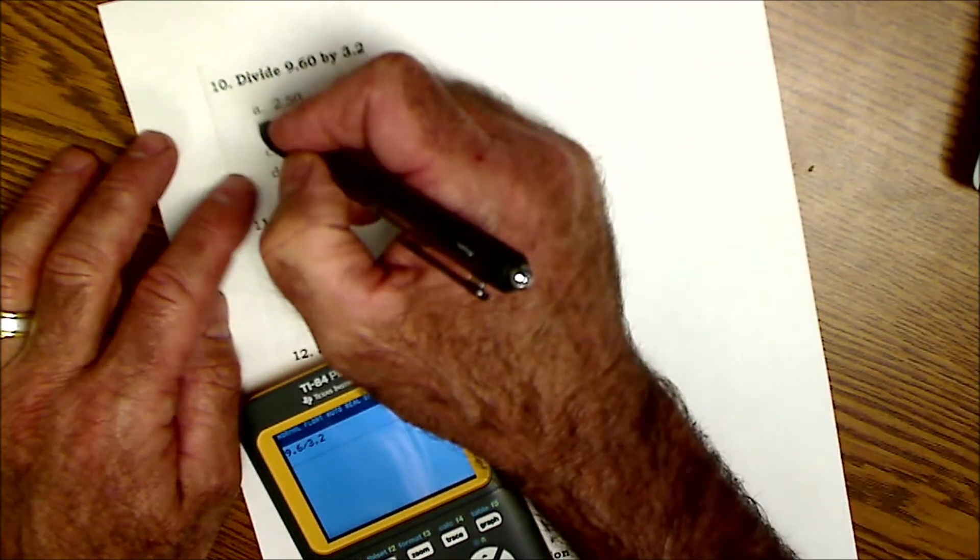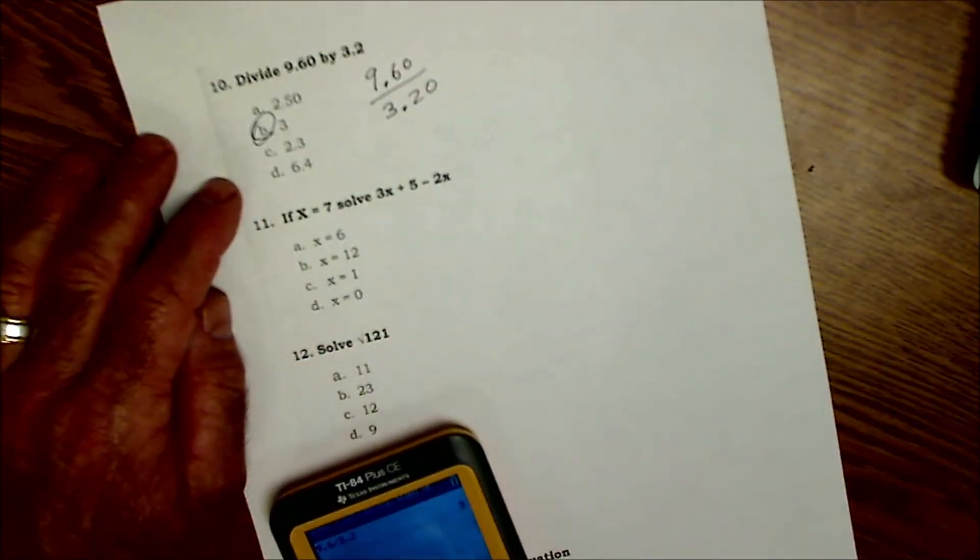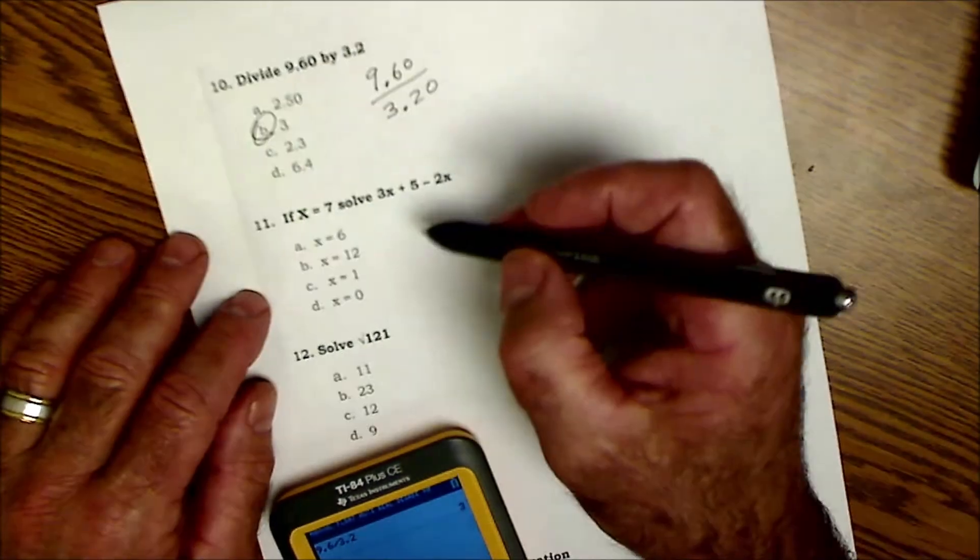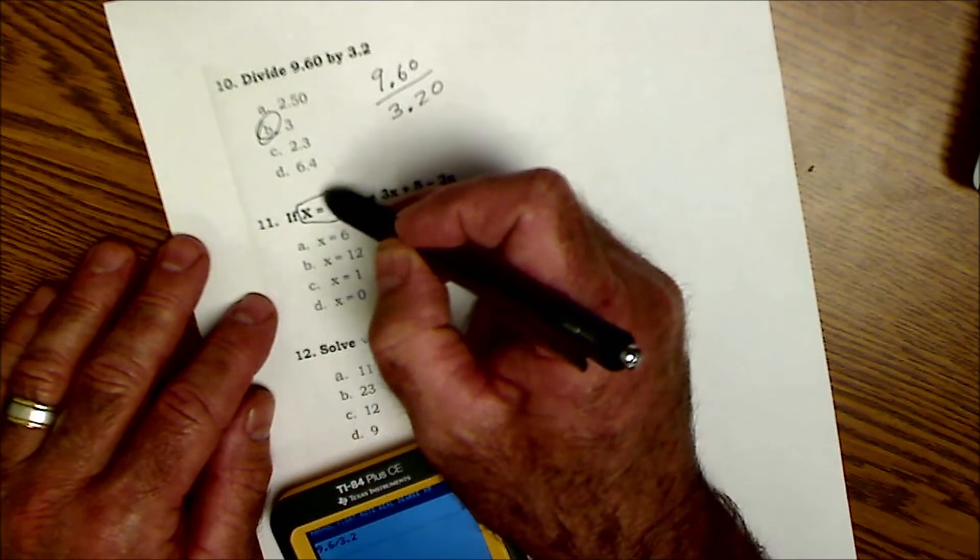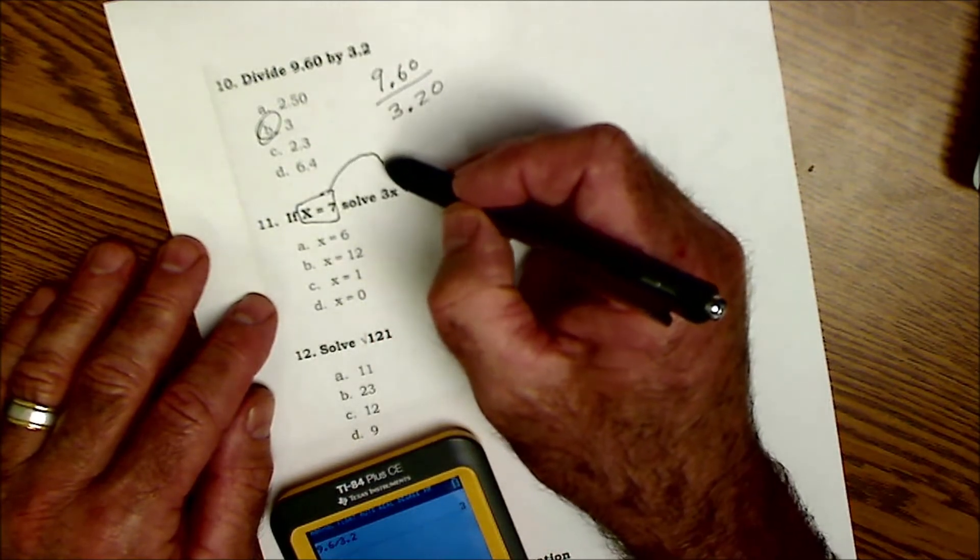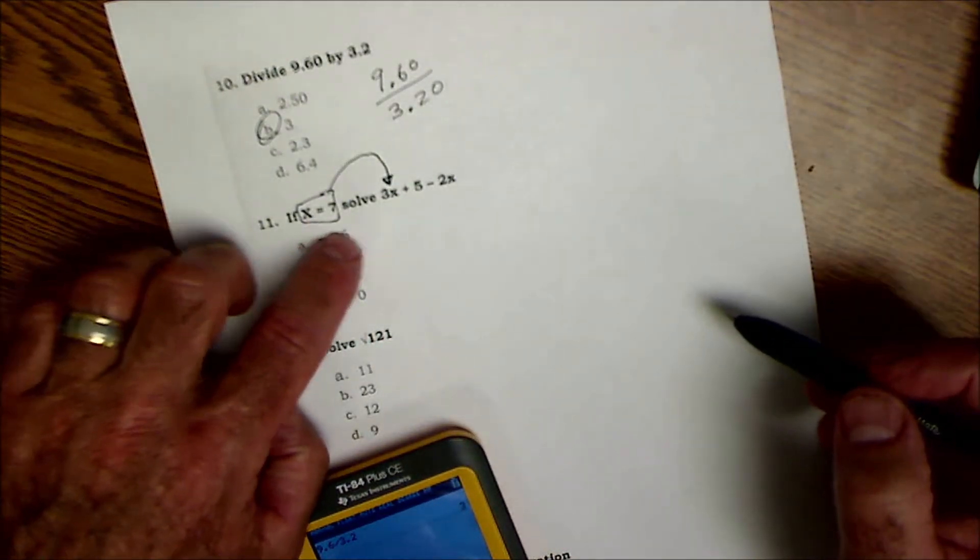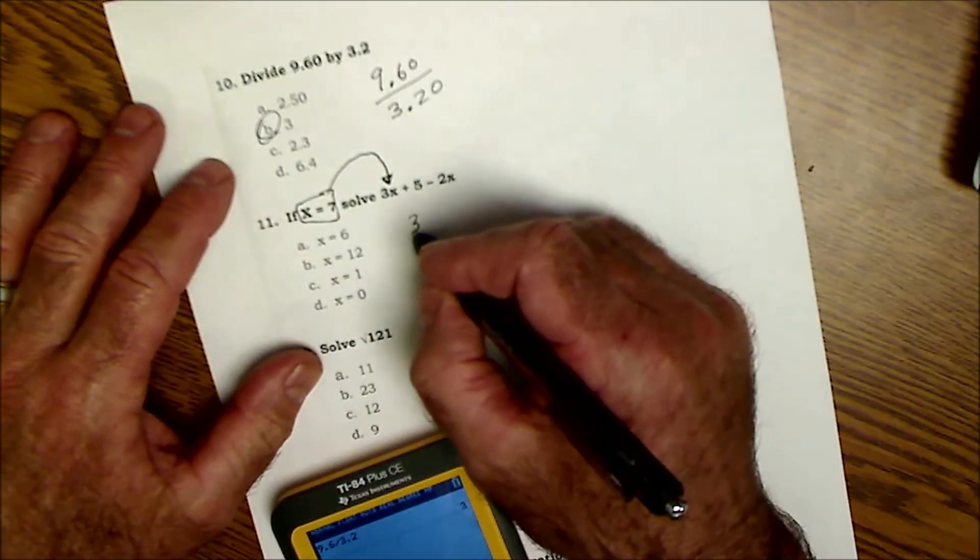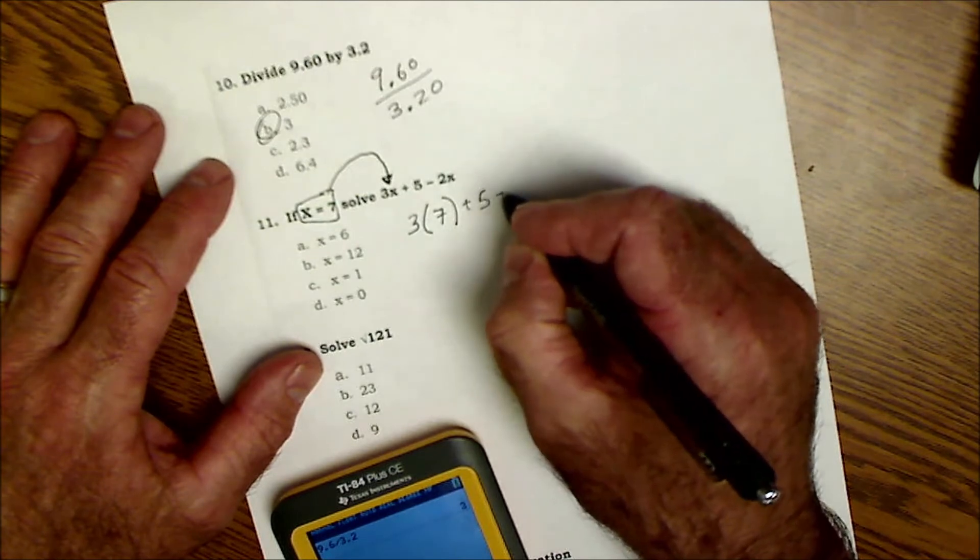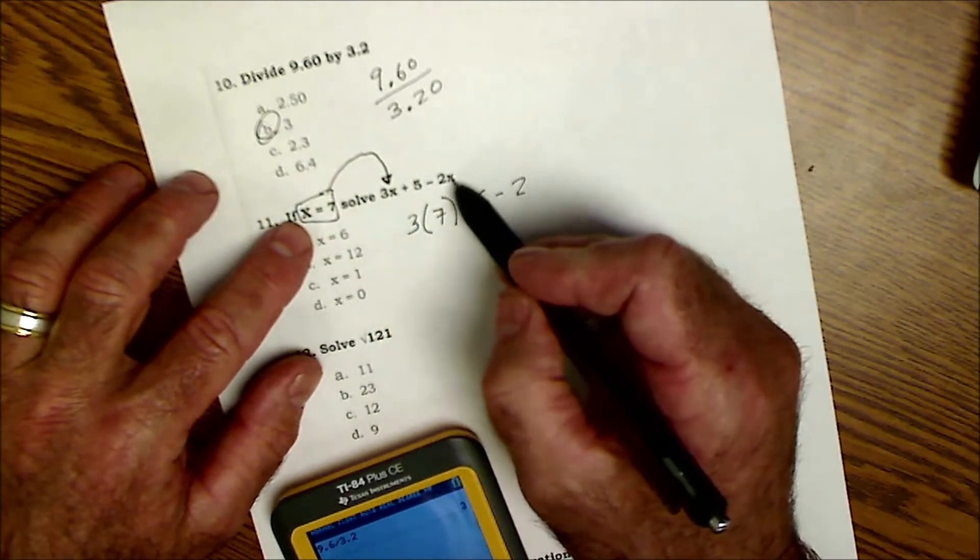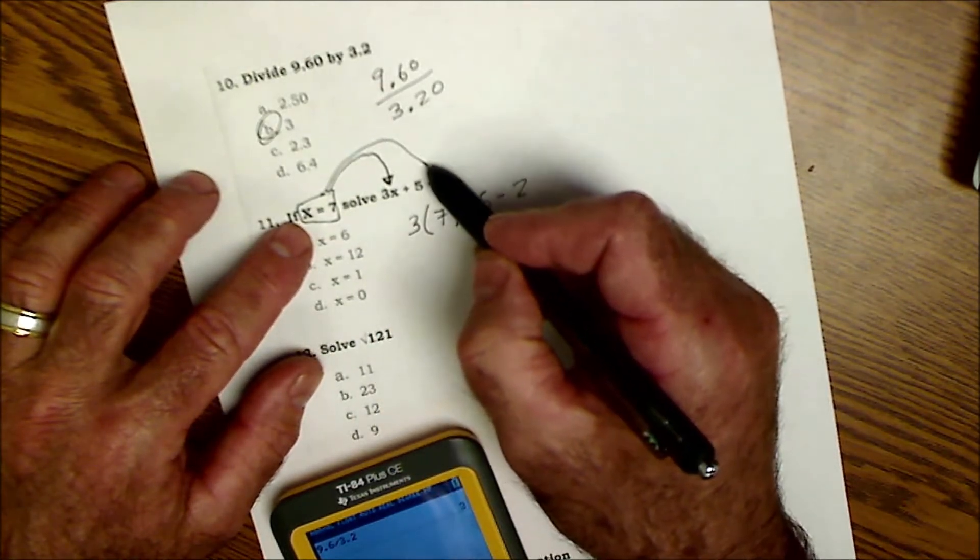Here's an equation. What this is saying is x is equal to some number. Take that number and replace x with that number, so that x value goes right in there. 3 times that value of 7, plus 5, minus 2 times x. There's another x so that 7 also goes in there, times 4. Then order of operations is multiplication before addition, so I do 21 plus 5 minus 14.